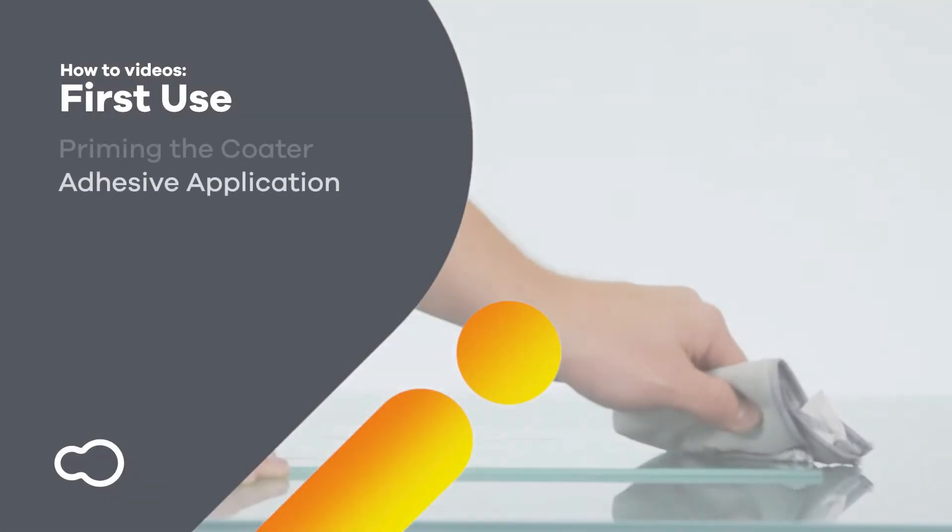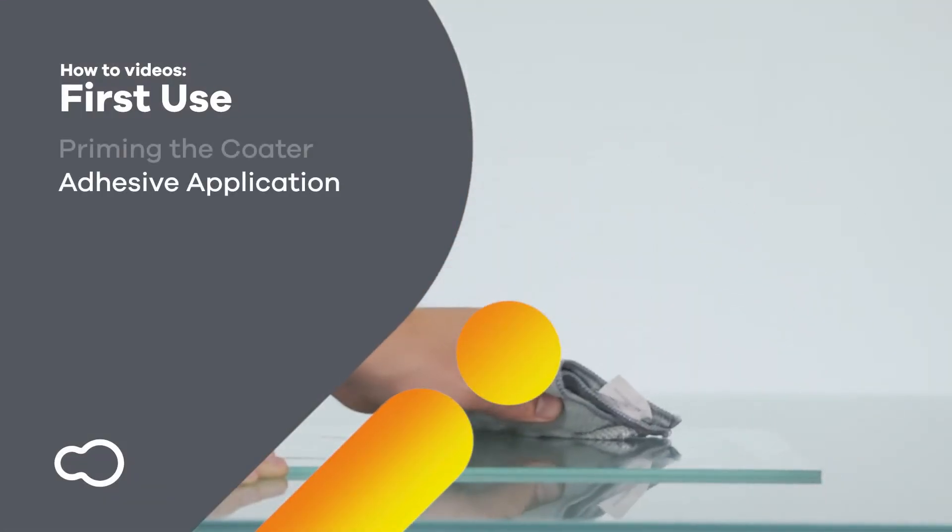You are now ready to apply Magigoo adhesives. Make sure that your build platform is thoroughly cleaned and has a smooth and even surface.